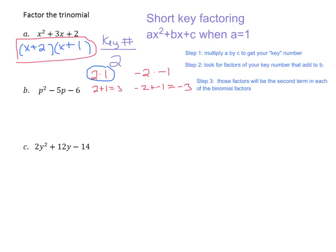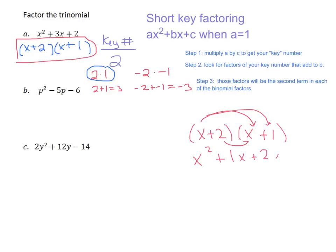How can you tell if you did this problem right? Just take it over here and go ahead and FOIL it out. Take x plus 2 and x plus 1 and FOIL: x times x is x squared, x times 1 is positive 1x, 2 times x is positive 2x, and 2 times 1 is positive 2. Combine those middle terms and you get x squared plus 3x plus 2. We're just going backwards from factoring — we learned how to FOIL last week, and now we're learning how to take something all foiled out and get it back into its nice factors.